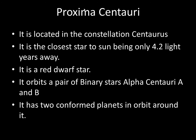Now some information about Proxima Centauri. It is located in the constellation Centaurus. It is the closest star to the sun, being only 4.2 light years away. It is a red dwarf star, meaning it is not a very big star. The smaller the star, the longer its life, so this star will have a really long life. It orbits a pair of binary stars, Alpha Centauri A and B. It has two confirmed planets in orbit around it.